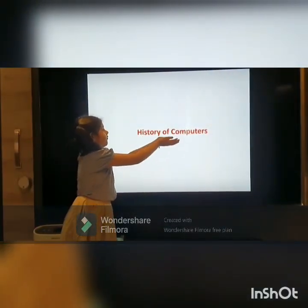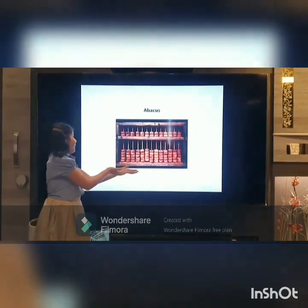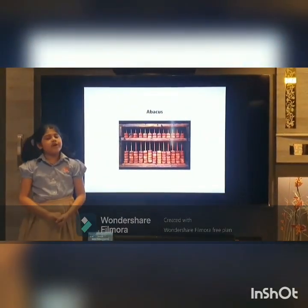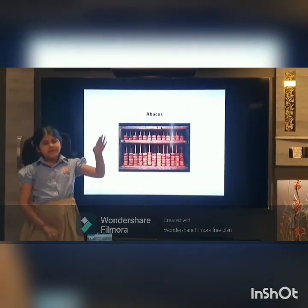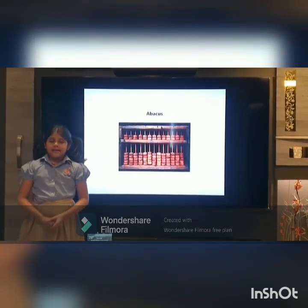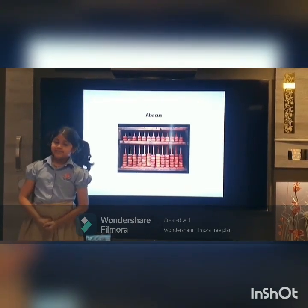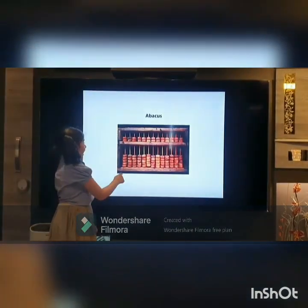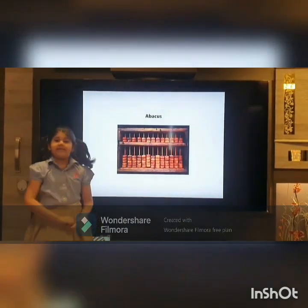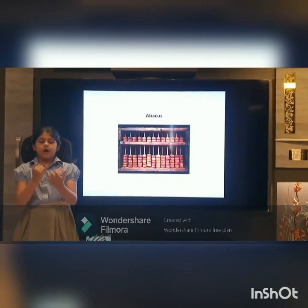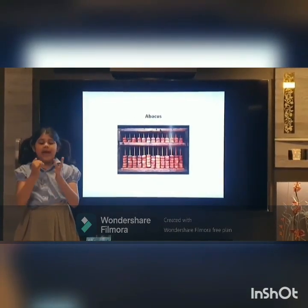History of computers. First, the Abacus — the first known counting machine, invented by the Chinese about 500 years ago. It has rods and beads and is mainly used for addition, subtraction, multiplication, and division. Second, Napier Bones — invented by John Napier, a Scottish mathematician. It has a set of bones with nine rods for each digit and a constant rod for zero.